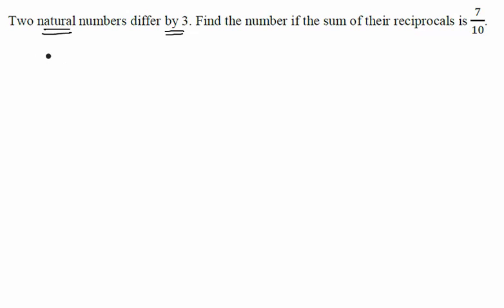So let us start and consider one of the numbers as x. If one number is x and the two numbers differ by 3, then I can take another number as x plus 3. This is a valid assumption because x and x plus 3 will always differ by 3.